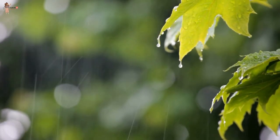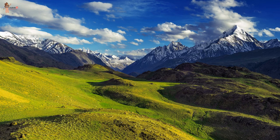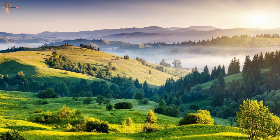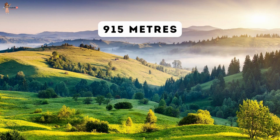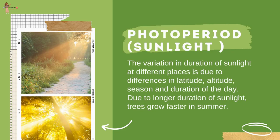On the slopes of the Himalayas at 915 meters, the fall in temperature affects the type of vegetation and its growth, changing it from tropical to subtropical, temperate and alpine vegetation.